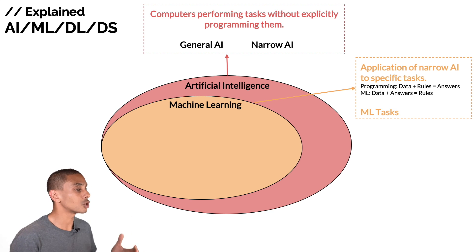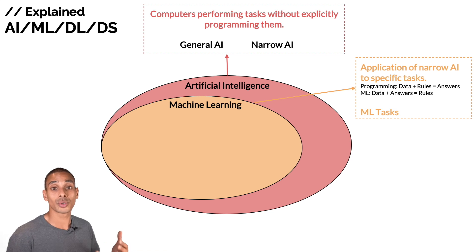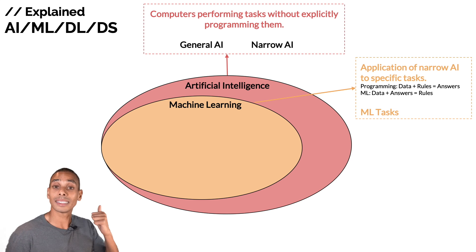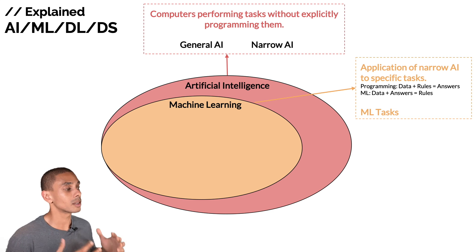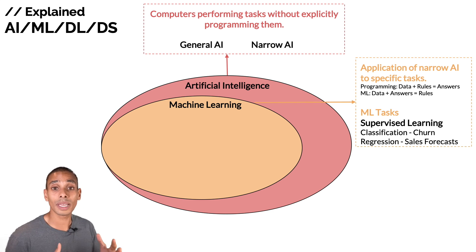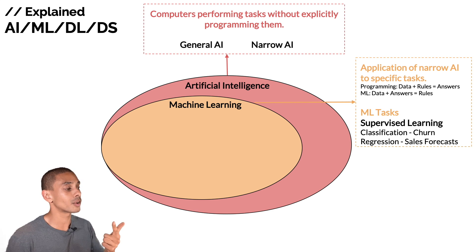So what are some typical machine learning tasks? We broadly break machine learning out into three key categories: supervised learning, unsupervised learning, and semi-supervised learning. Supervised learning can be broadly broken out into two key categories: classification and regression.